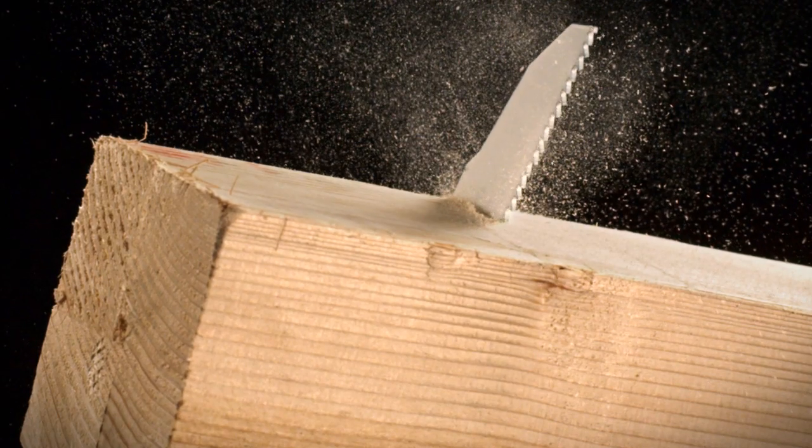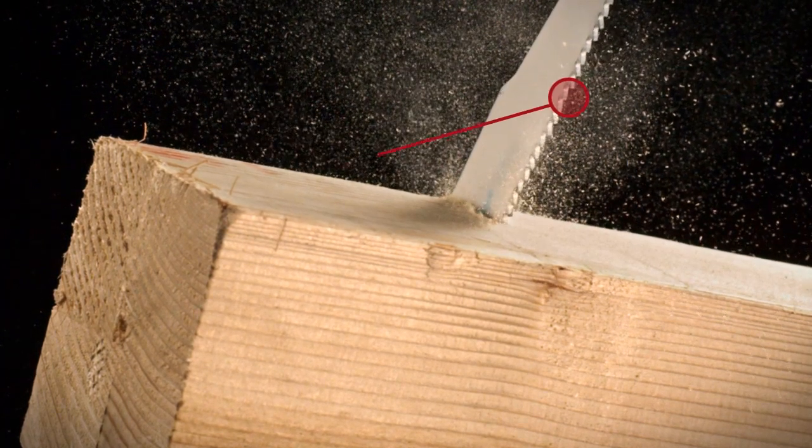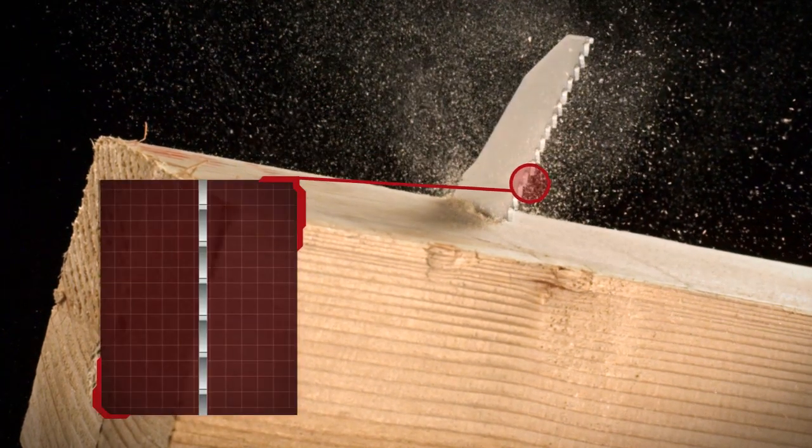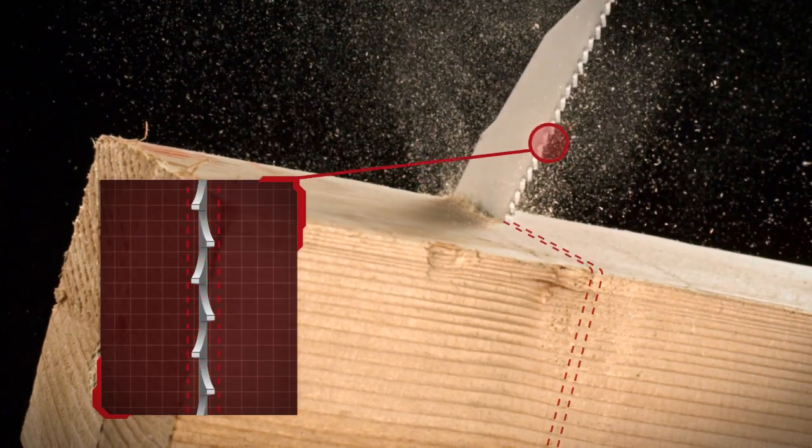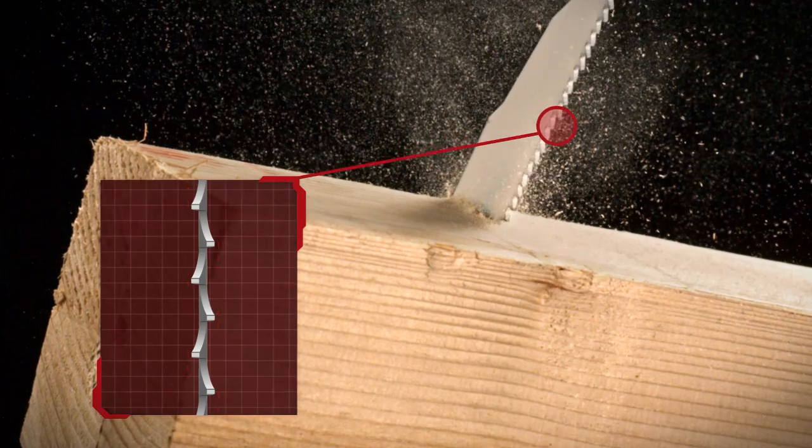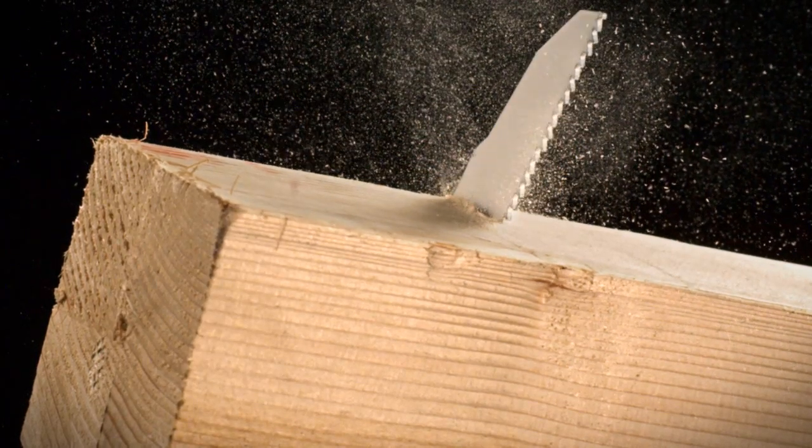If all of the teeth on a reciprocating blade were lined up single file, it would cut inefficiently and build up excess heat. By setting selected teeth to the left and right, we widen the cutting area which allows debris to be ejected and reduces friction and heat buildup.